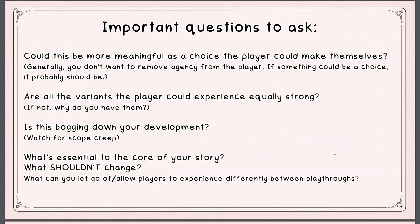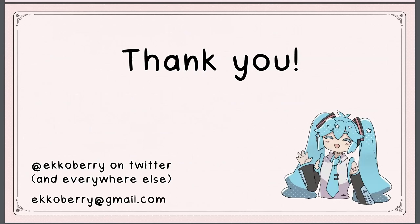Some important questions to ask if you're going to use randomization: Could this be more meaningful as a choice the player makes themselves? Generally you don't want to remove agency from the player — if something could be a choice, it probably should be. Are all variants the player could experience equally strong? Is it bogging down your development? Watch for scope creep. What's essential to the core of your story, what shouldn't change, and what can you let go of or allow players to experience differently between playthroughs?